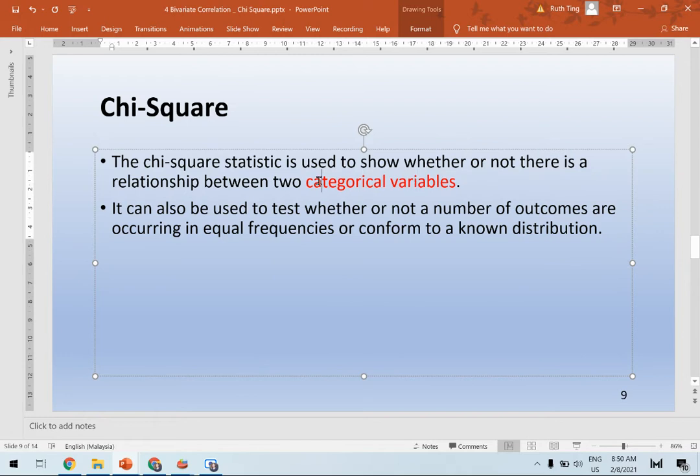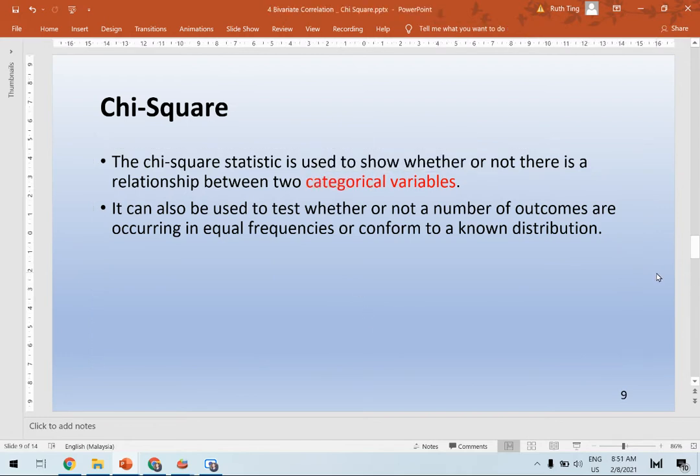These two variables have to be categorical. For example, you have gender: female and male. Or you have another variable which is major of study, so you have different kinds of major study.